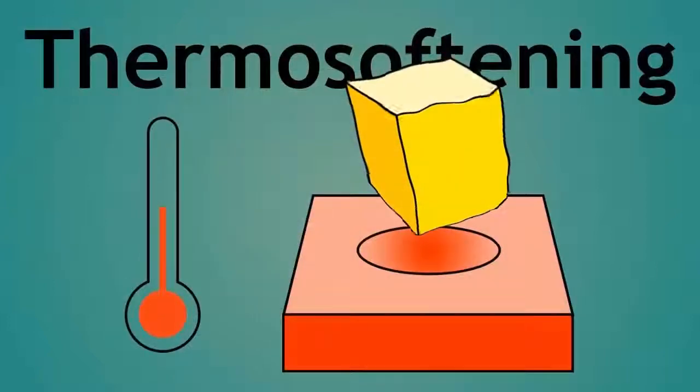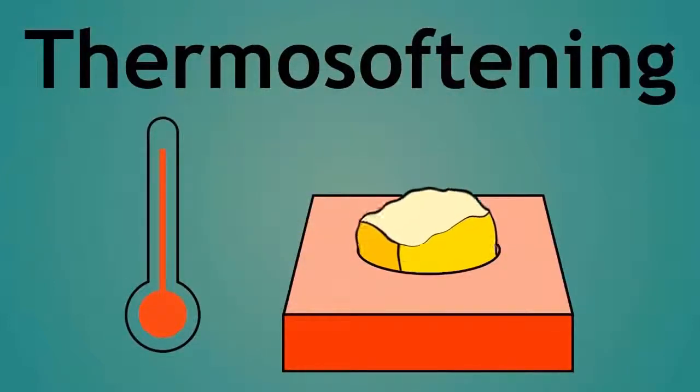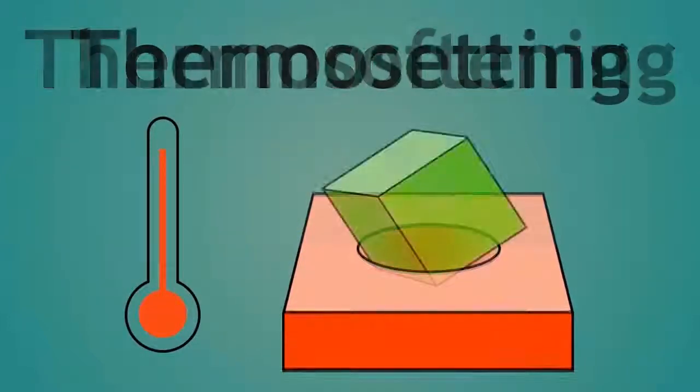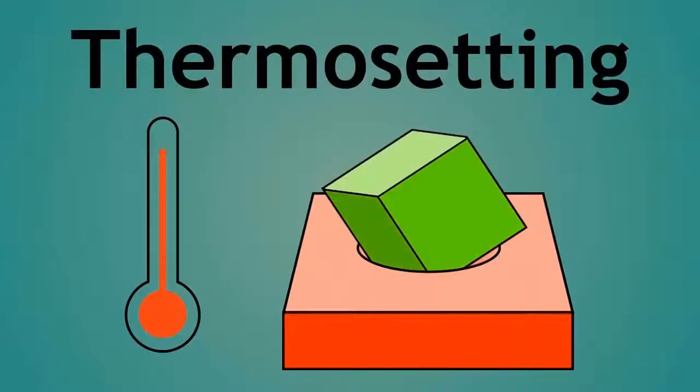In summary, thermosoftening plastics are soft and melt when heated, whereas thermosetting plastics are hard and do not soften or change their shape when heated.